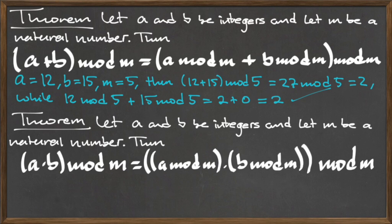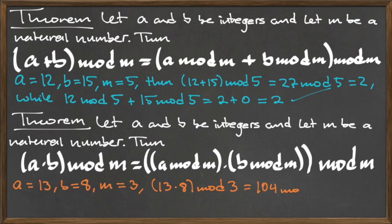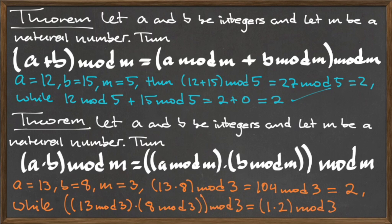The second theorem describes how mod behaves under the operation of multiplication. Let a and b be integers and let m be a natural number. Then the quantity (a times b) mod m is equal to the entire quantity ((a mod m) times (b mod m)) all mod m. To illustrate this, let a equal 13, b equal 8, and m equal 3. Then the left-hand side is 13 times 8 mod 3, which equals 104 mod 3, which equals 2. To evaluate the right-hand side, we work from the innermost parentheses outward. 13 mod 3 equals 1, 8 mod 3 equals 2, 1 times 2 equals 2, and 2 mod 3 equals 2. Since both sides agree, the theorem holds.